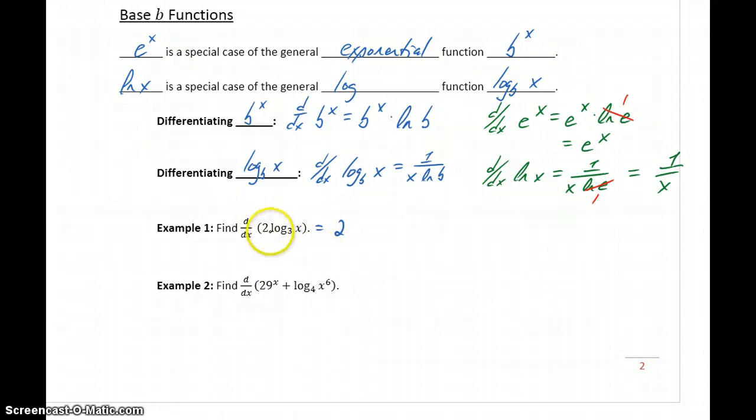In this case, the derivative would be 2 times the derivative of the log base 3 of x. We'll get 1 over x times the natural log of 3, or 2 over x times the natural log of 3.